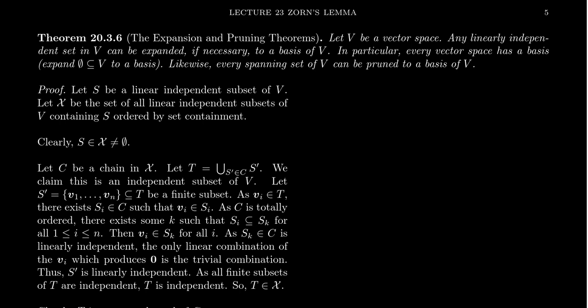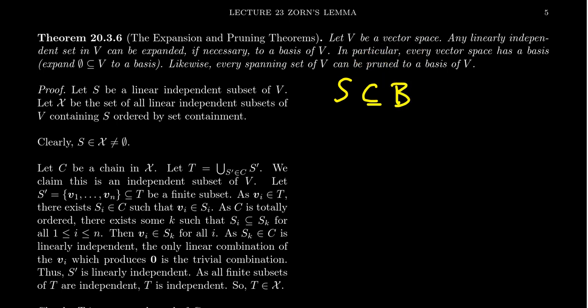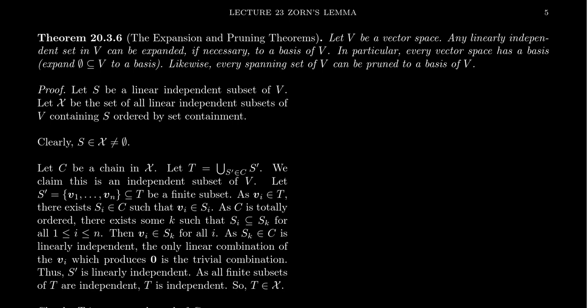That's what the expansion theorem says — every linearly independent set can be expanded to a basis by adding vectors until it becomes a linearly independent spanning set. In particular, S is a subset of a basis. Growing a linearly independent set doesn't necessarily keep it linearly independent, so the expansion theorem is important. In particular, every vector space has a basis because the empty set is a linearly independent set in any vector space, and it can be expanded into a basis.